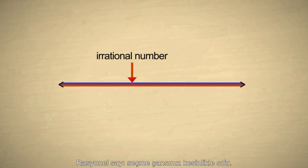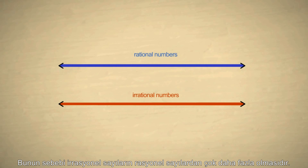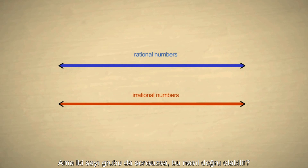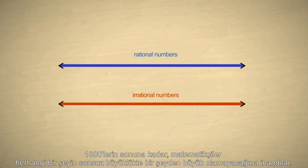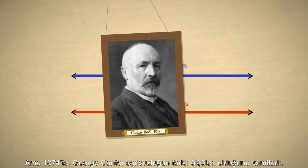The chances are essentially zero that you would pick a rational number. This is because there are vastly more irrational numbers than rational numbers. But how can that be true if both collections of numbers are infinite? Until the late 1800s, mathematicians believed that nothing could be larger than anything that was infinitely large. But in 1874, Georg Cantor proved that there were different sizes of infinities.